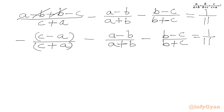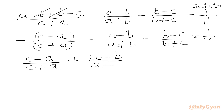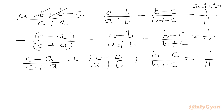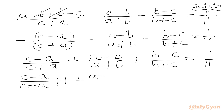Multiplying both sides by negative one, we get (c-a)/(c+a) plus (a-b)/(a+b) plus (b-c)/(b+c) equal to minus 1/11. The required expression has a, b, c in the numerators, but here we have c-a, a-b, b-c. So we add 3 to both sides, writing (c-a)/(c+a) + 1 plus (a-b)/(a+b) + 1 plus (b-c)/(b+c) + 1.